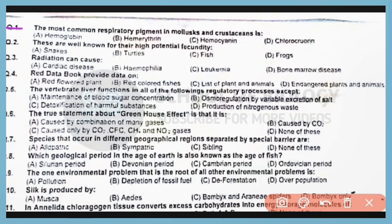Question number 1. The most common respiratory pigment in mollusks and crustaceans is hemoglobin. Correct answer is option A.